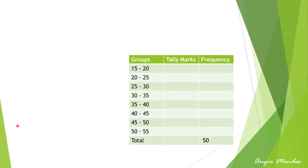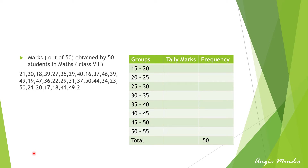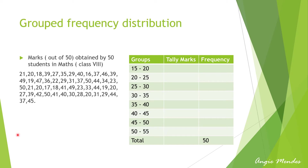Sometimes we have to deal with a large dataset. For example, consider marks out of 50 obtained by 50 students in maths in class 8. If we make a frequency distribution table for each observation, the table would be too long. For convenience, we make groups of observations like 0 to 10, 10 to 20, and so on, obtaining a frequency distribution of observations falling in each group. Since the lowest mark obtained is 16, we start with the group 15 to 20. This is called a grouped frequency distribution table.